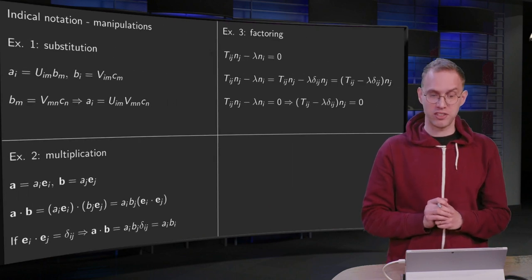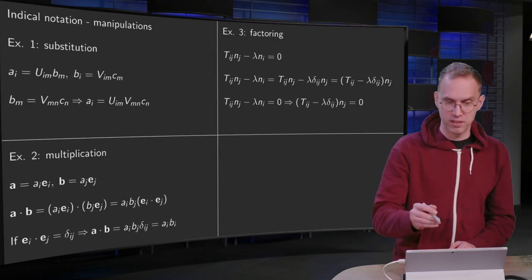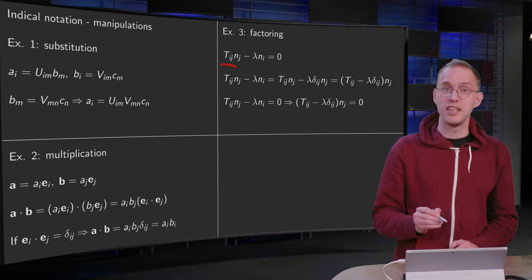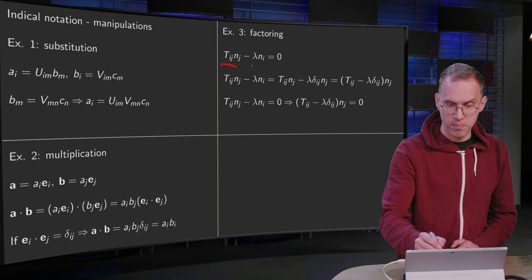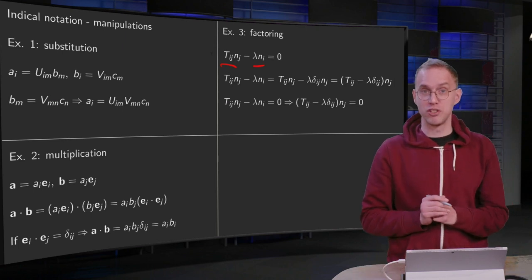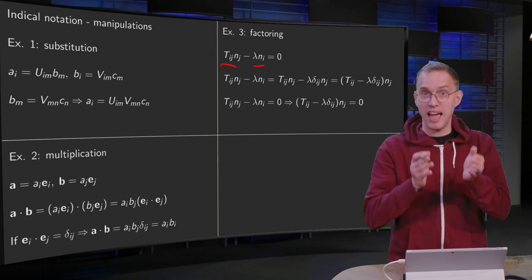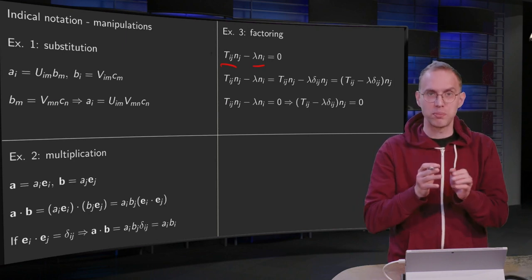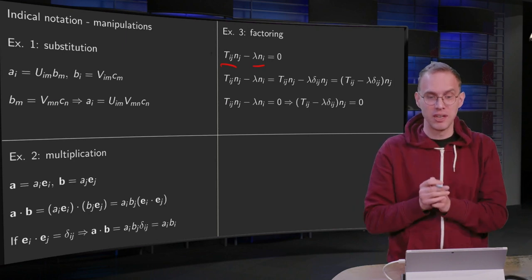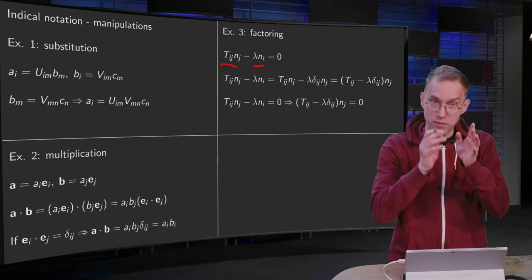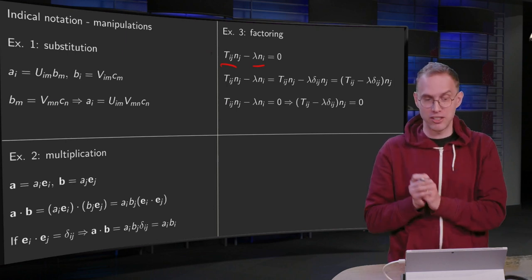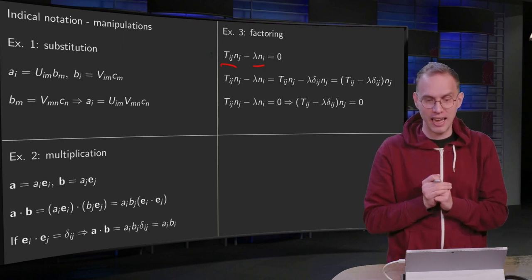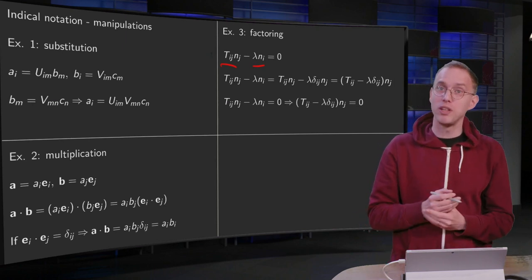Third example: factoring. For example, suppose we have this expression over here: T_ij n_j minus lambda n_i = 0. And we have an n on the left and on the right—sorry, we have an n in both expressions—we'd like to take it out. However, in the first term we have an n_j, and in the second term we have an n_i. So how can we factor this n out? Well, we use a trick.